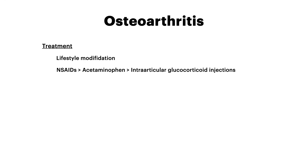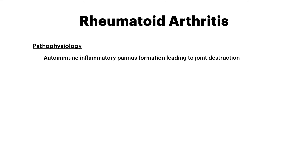That's osteoarthritis — a disease of degeneration and inflammation due to too much mechanical force through a weight-bearing joint in somebody with certain risk factors. Now let's compare that to rheumatoid. The pathophysiology of rheumatoid arthritis is autoimmunity. So yes, it's also inflammation, but it's autoimmune inflammation, and it leads to the formation of something called a pannus, which is what causes pain and destruction in the joint.